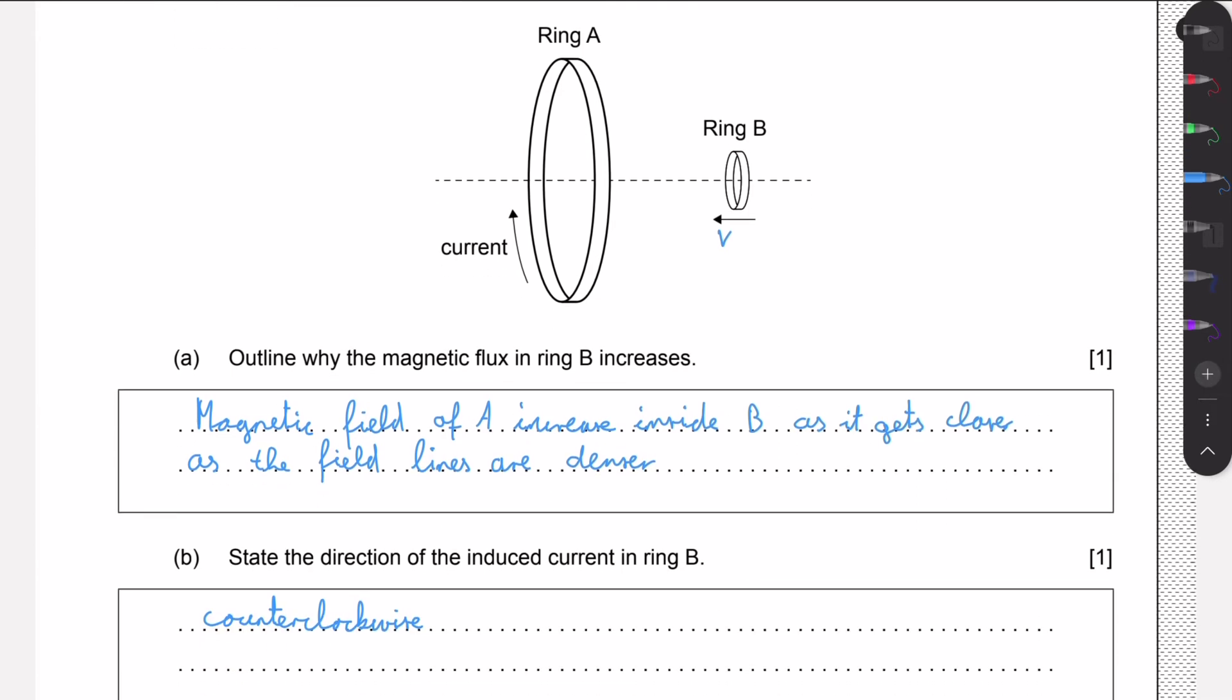But you could also deduce this if you use your right-hand rule. For example, you see that in ring A the current is moving clockwise, so your fingers would curl towards you and your thumb is pointing to the right, so we have a field this way. And as B is moving in towards A, its magnetic field is increasing this way.